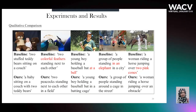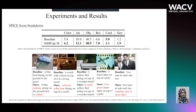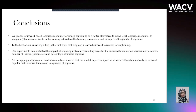These are some of the qualitative results which show that our model generates semantically correct captions which are more visually faithful to the images. Moreover, we provide the breakdown of the SPY score, which shows the improvement of our model in terms of color, attribute, objects, relationship, as well as size of the objects mentioned in the caption.